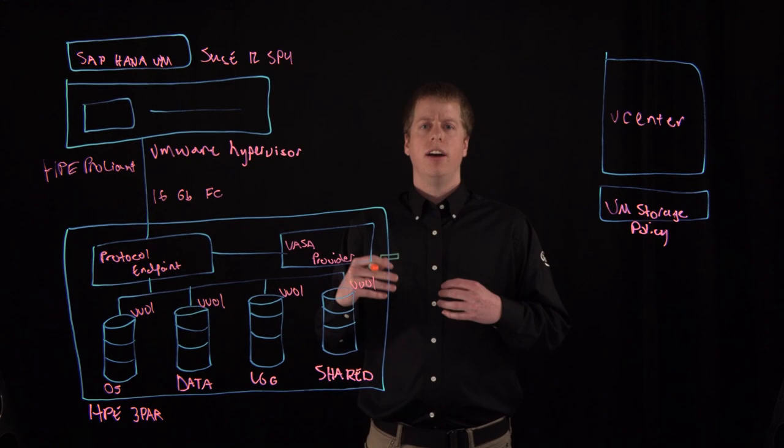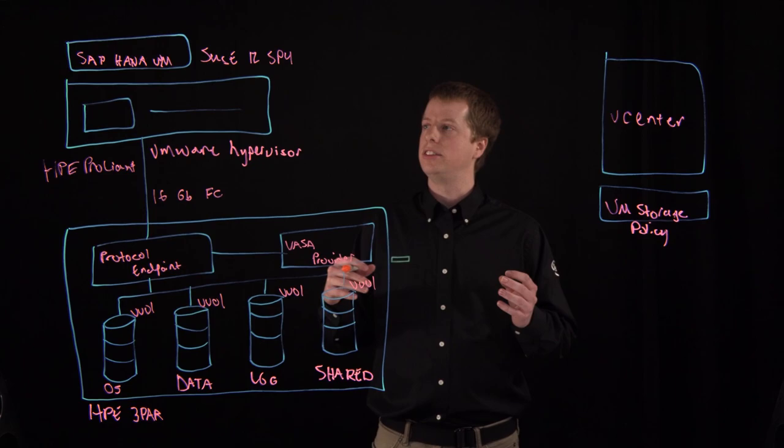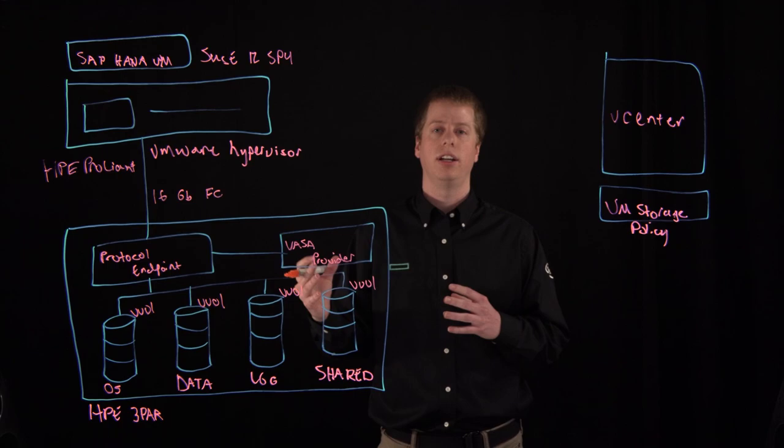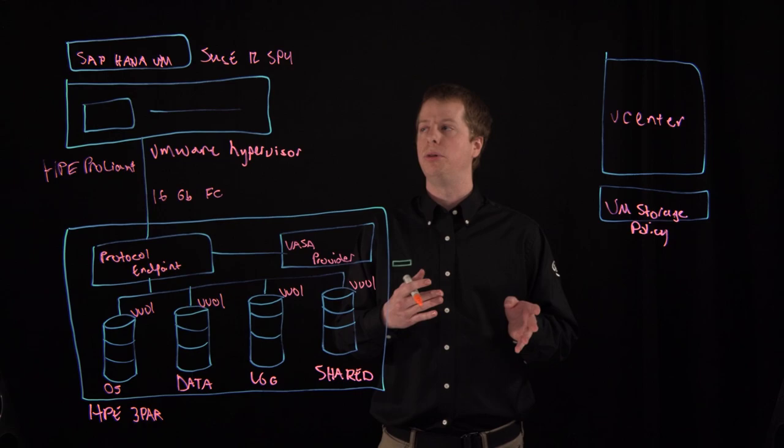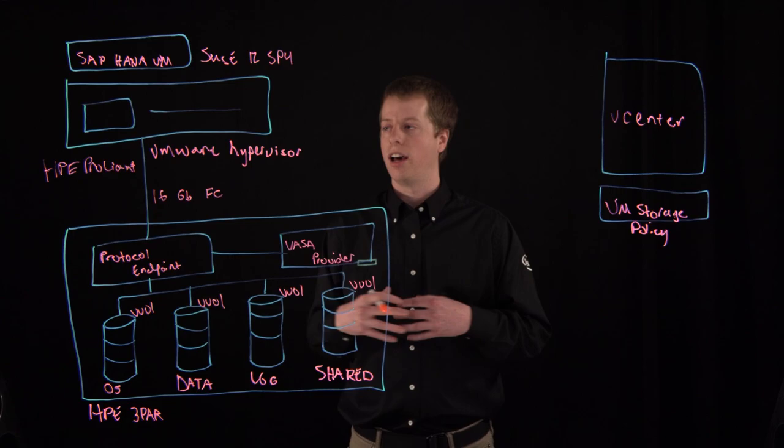This configuration is really advantageous in a number of ways. You can begin to leverage all of the capabilities of vSphere, including vMotion, which lets you migrate your VMs between hosts, or HA, High Availability, which if one of your hosts fails will automatically boot your SAP HANA VM on your secondary host, in addition to DRS and other VMware features.